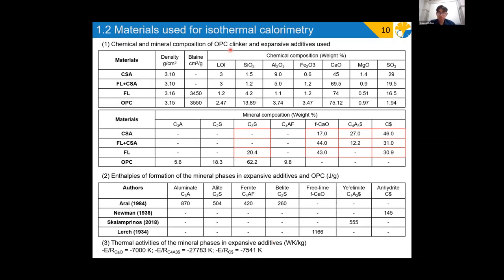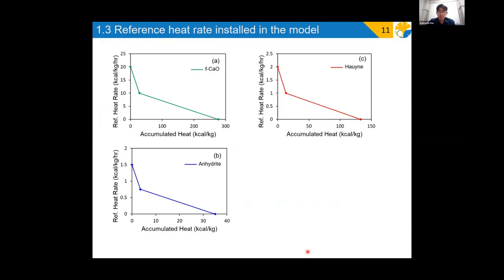Point one here is the chemical and mineral compositions of the materials which were used. Point two and point three are the enthalpy of formation of the mineral phases and the thermal activities of the expansive additive phases respectively from the literatures. Through the process which was mentioned earlier, the heat rate was determined.